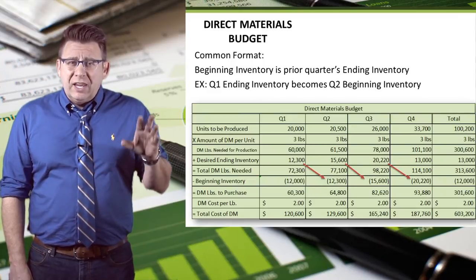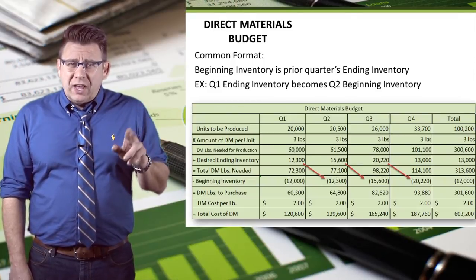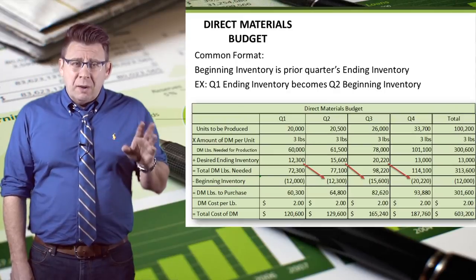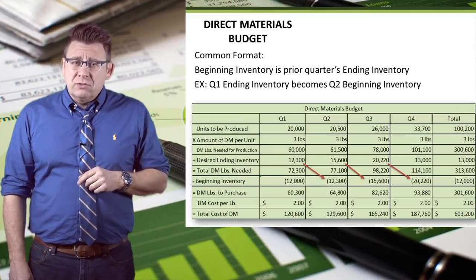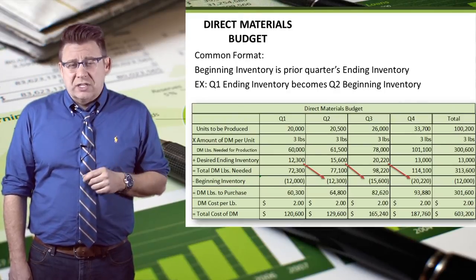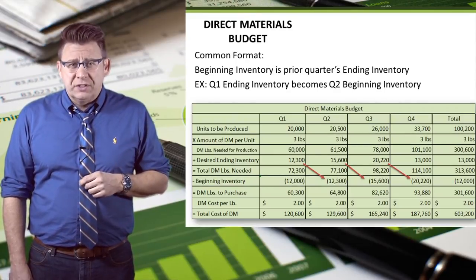Finally, we multiply the cost of direct materials per pound by the number of pounds to arrive at the total cost of direct materials.